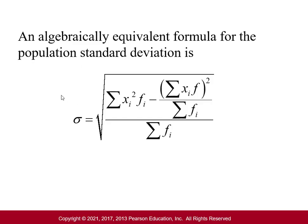There is an alternative version of the formula that may be quicker to compute by hand. The denominator is the same, but instead of computing (x minus mean) before squaring, you can square each x value and multiply by its frequency, then separately multiply each x by its frequency, add those up, and square that total. Then subtract the second from the first, dividing by the sum of frequencies — this can be faster because you avoid the subtraction step before squaring. But we'll do this with StatCrunch.